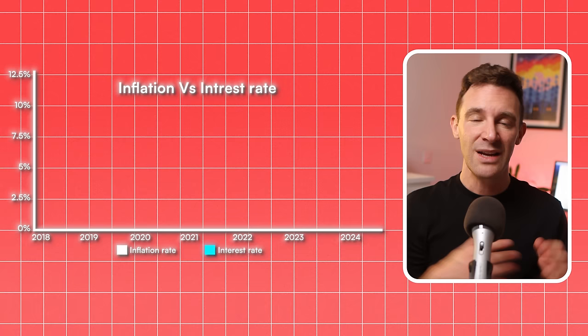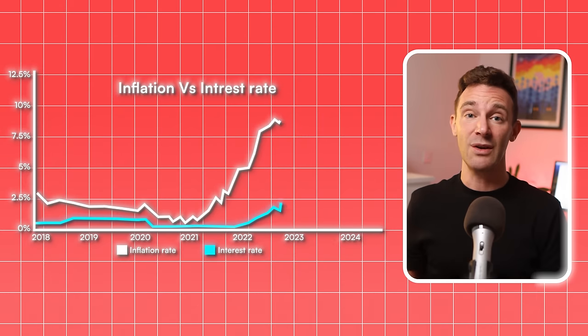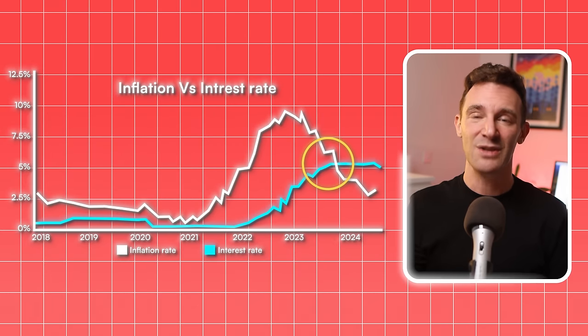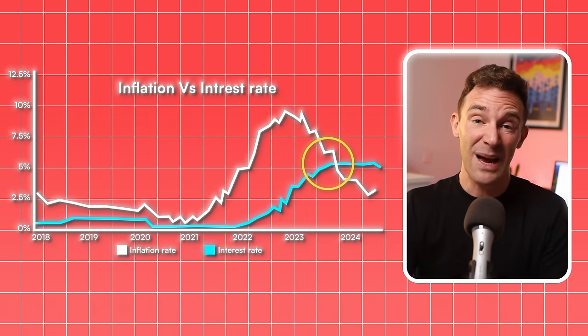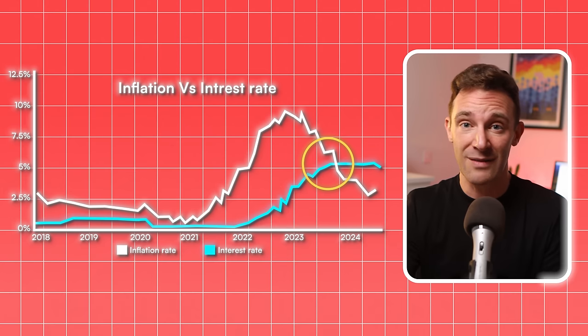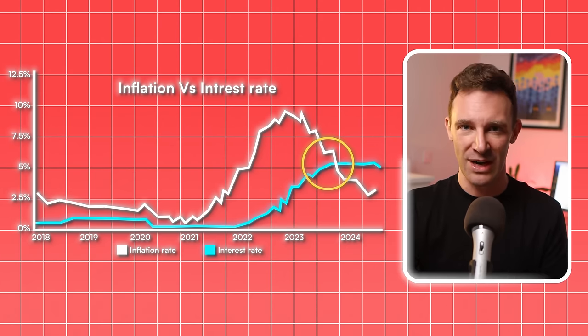This is exactly why we've seen such a dramatic change over the last couple of years. Interest rates shot up from nearly zero to more than 5% because inflation was completely out of control. And the Bank of England, along with other central banks around the world, had to slam on the brakes.